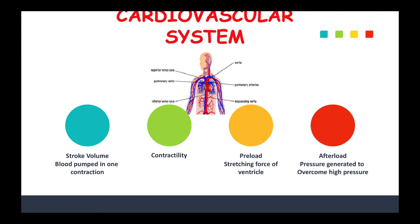Afterload is the pressure the ventricle muscle has to generate to overcome the higher pressure found in the aorta to eject the blood out. In a nutshell, that's the cardiovascular system — arteries, veins, capillaries and all. For stroke volume, think about contractility, preload, and afterload. These are terms you're going to see often on exams along with the Fick principle and diffusion.